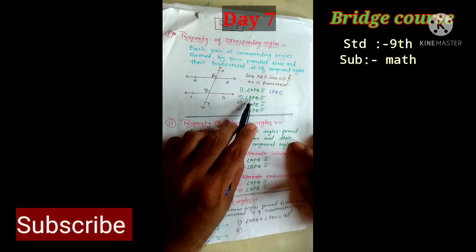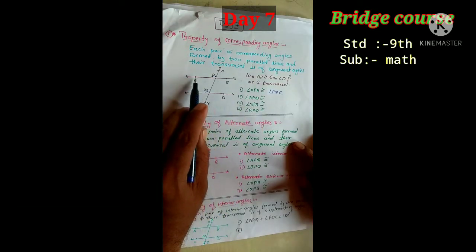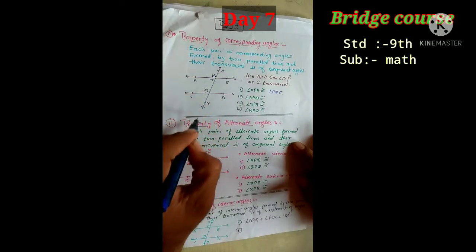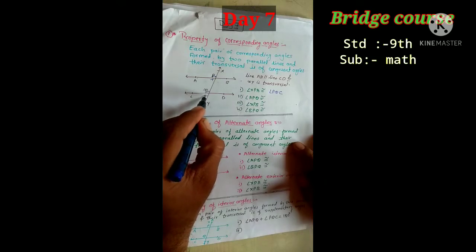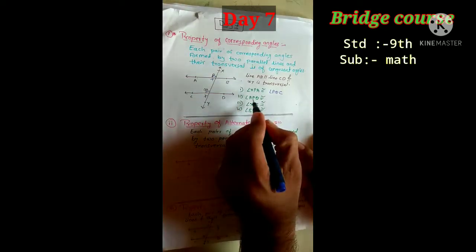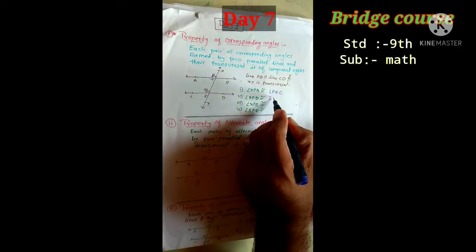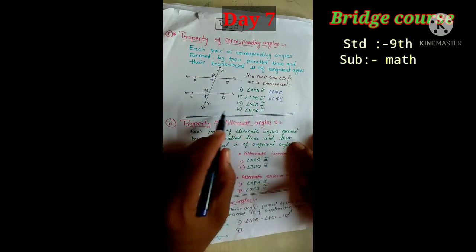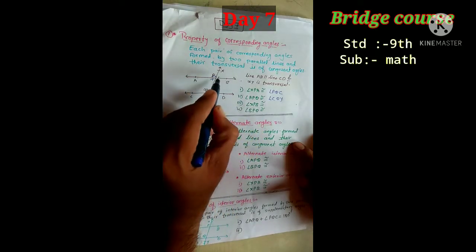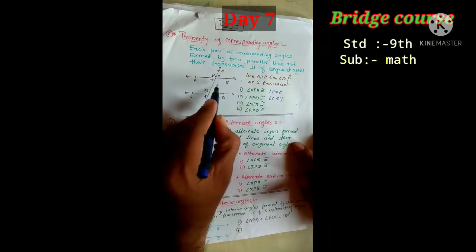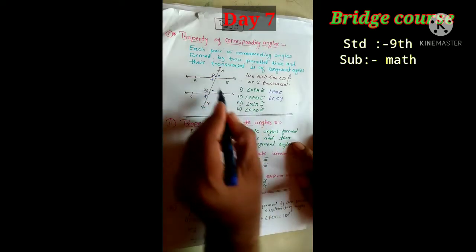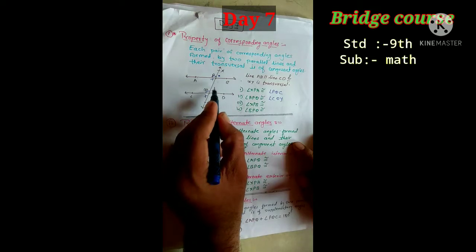If you want to see the angle of XPA — corresponding angle, corresponding angle — P, Q, D, and one side: PXB is a congruent angle.